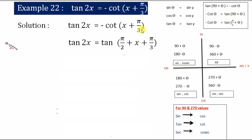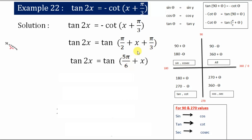This whole term (x + π/3) is θ. So what we get is: tan 2x = tan(π/2 + x + π/3). When I add π/2 and π/3, I get 5π/6, plus x. So now this equation is in the form of tan θ = tan y, where 2x is θ and 5π/6 + x is y.